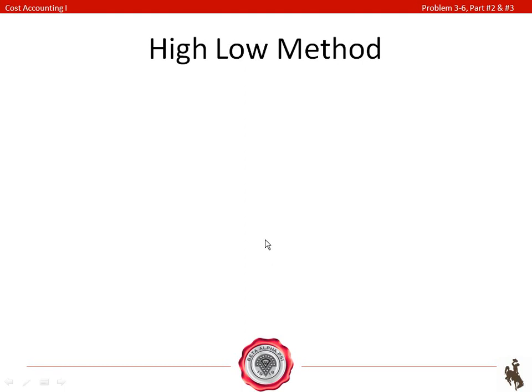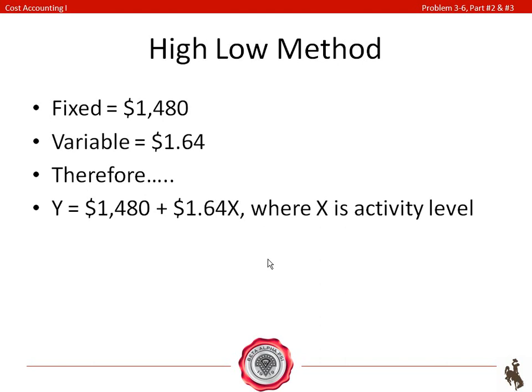Now that you have your variable costs and fixed costs, you can plug it in and use the equation. Y equals fixed costs plus variable costs times your activity level. So, we have fixed costs of $1,480, variable costs of $1.64. So, your line is going to look like Y equals $1,480 plus $1.64X. And make sure that you know that X is your activity level.